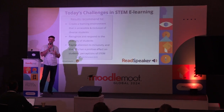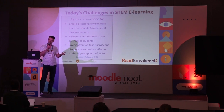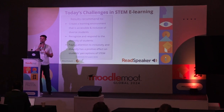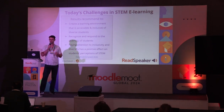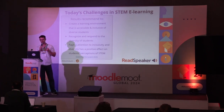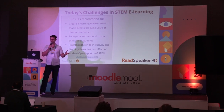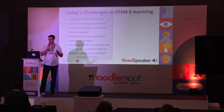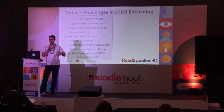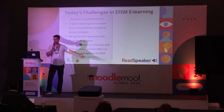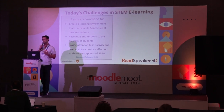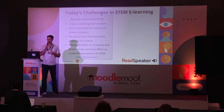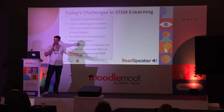Luckily this literary study didn't just aggregate challenges — they also looked into recommendations found across all of these studies. I cherry-picked the three most relevant ones for today's presentation. They boil down to: create a learning environment that is accessible and inclusive to all students; recognize and act on the diversity of your student population; and understand that paying attention to their diversity will increase their positive perception, which will boost their engagement in STEM e-learning.